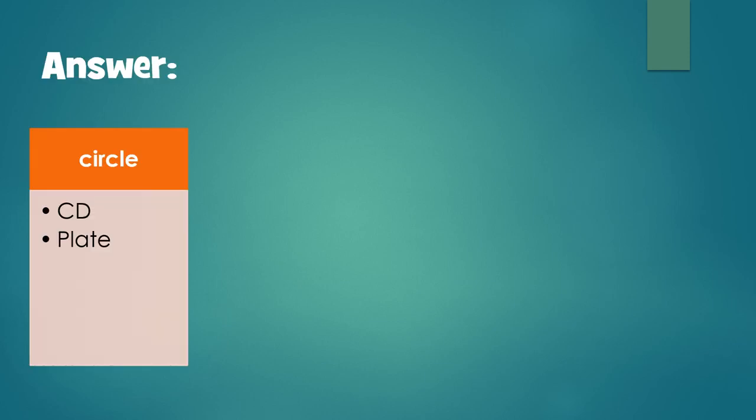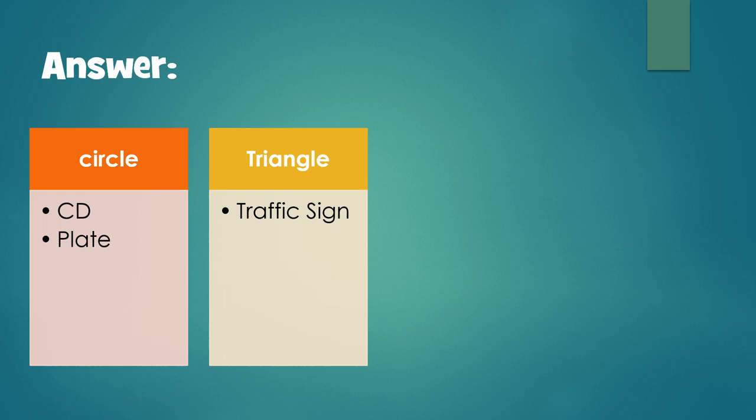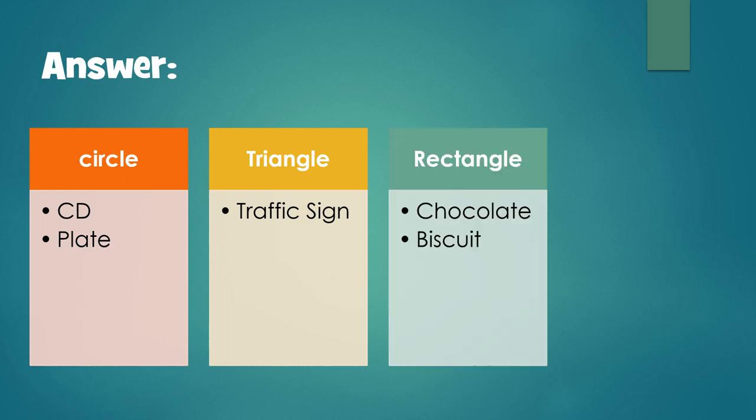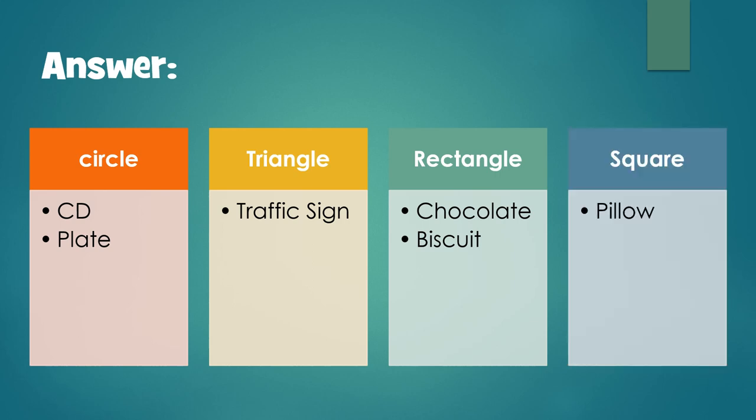And the answer is, for a circle shape: a CD and a plate. For a triangle: a traffic sign. For a rectangle: a chocolate and a biscuit. And the last one, a square: the pillow.